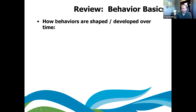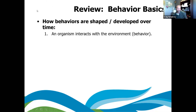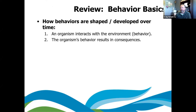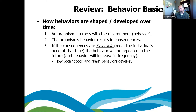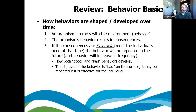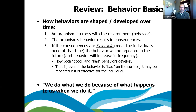A person interacts with the environment — that's the behavior. That behavior is going to result in some type of consequence. If those consequences are favorable, meaning they meet that individual's need at that time, that behavior is going to be repeated in the future and increase. This is how good and bad behavior labels develop. I can think of a lot of bad behaviors that pay off for kids and they continue to be exhibited — it's functional for them. So if it's bad on the surface but meets the individual's need, it's going to be repeated. We do what we do because of what happens to us when we do it.